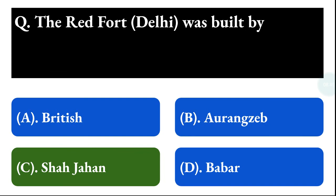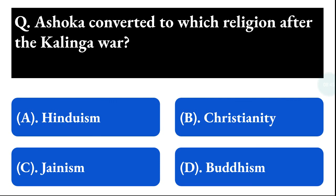Next question: Ashoka converted to which religion after Kalinga War? Option A: Hinduism, option B: Christianity, option C: Jainism, option D: Buddhism. The correct answer is option D, that is Buddhism.